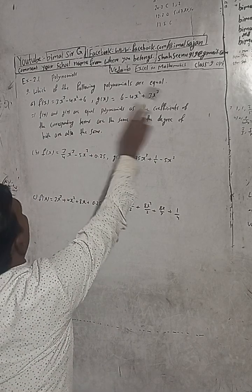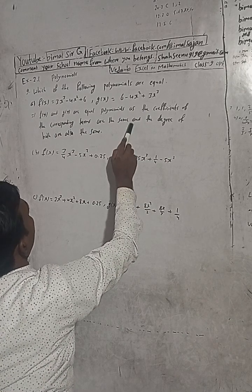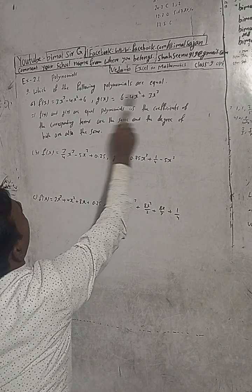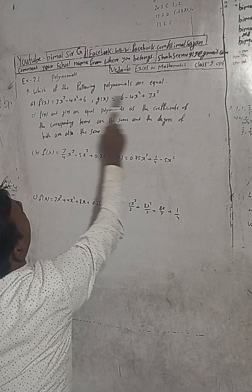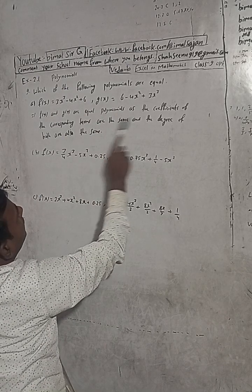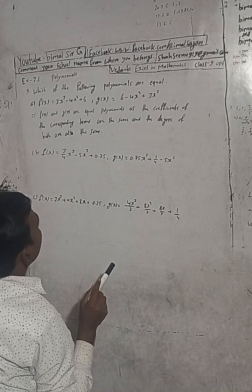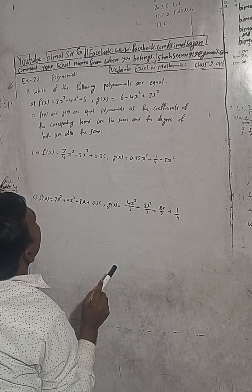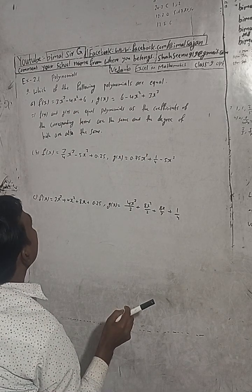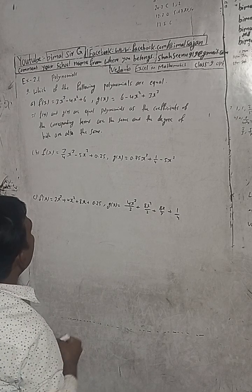So, which of the following polynomials are equal? f(x) and g(x) are equal polynomials because the coefficients of the corresponding terms are the same. The coefficient of x² is minus 4 in both, and the constant is plus 6 in both. The degrees are also the same — the highest degree here is 3 in both. So this is called equal polynomials.